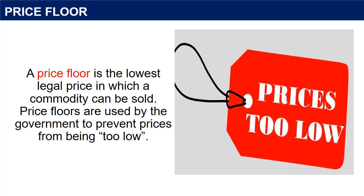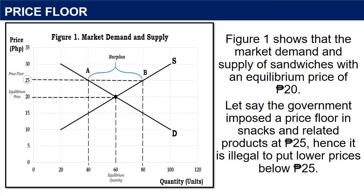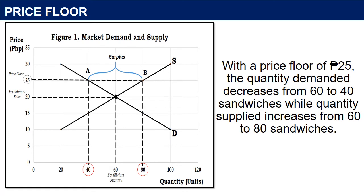To make the discussion clearer, let us use the market demand and supply of sandwiches. Figure 1 shows the market demand and supply of sandwiches with an equilibrium price of 20 pesos. The government imposed a price floor on snacks and related products at 25 pesos, making it illegal to set prices below 25 pesos. With this price floor, quantity demanded decreases from 60 to 40 sandwiches while quantity supplied increases from 60 to 80 sandwiches, causing a temporary surplus of 40 sandwiches (80 minus 40), since suppliers are encouraged to produce more.